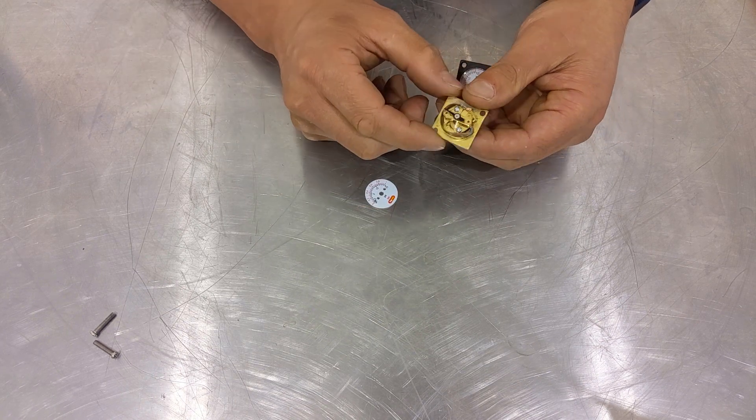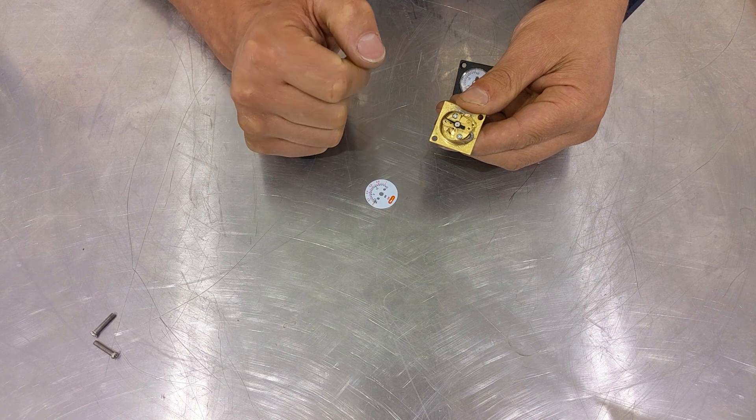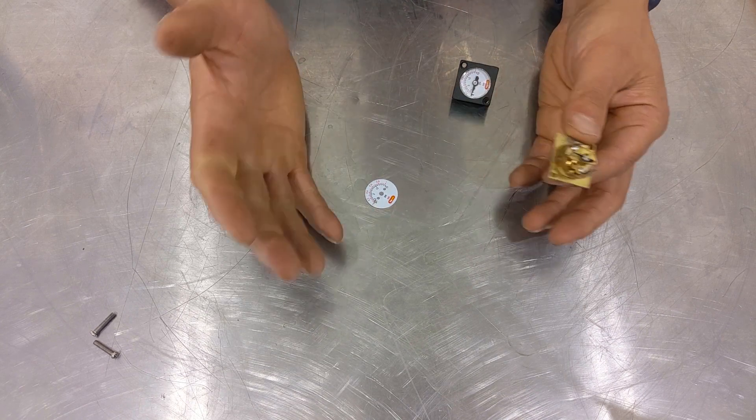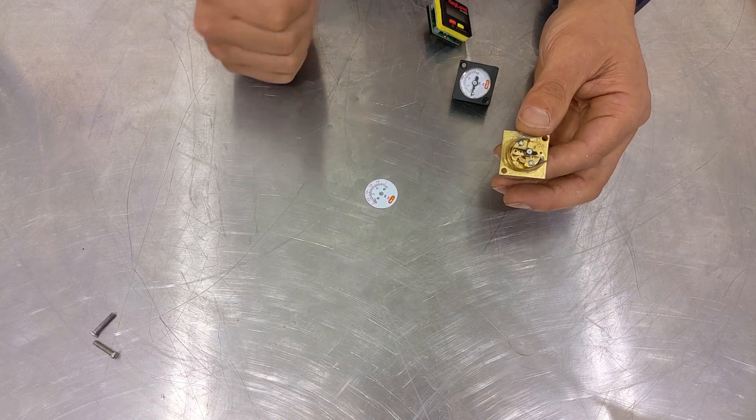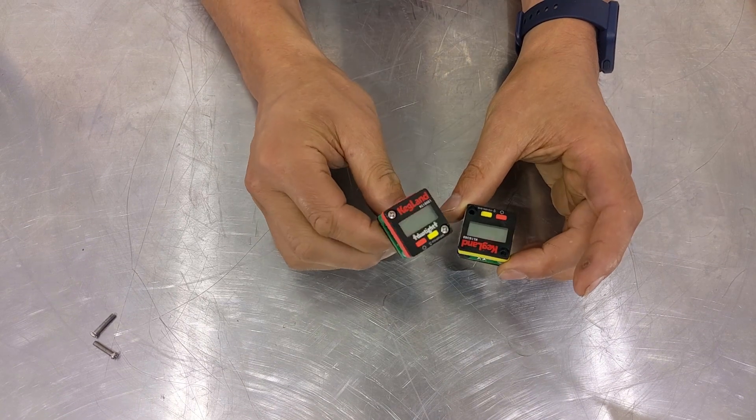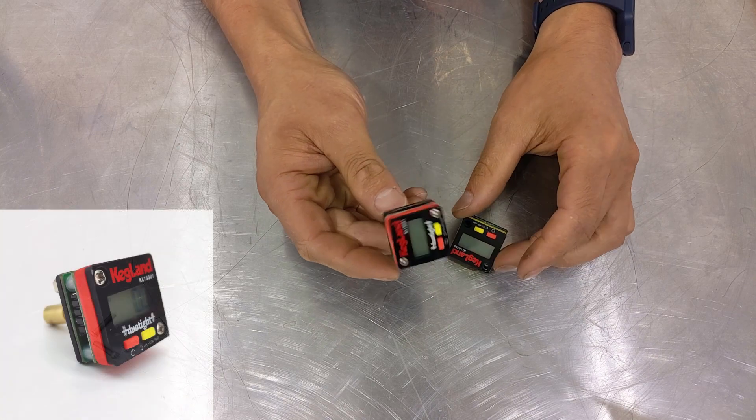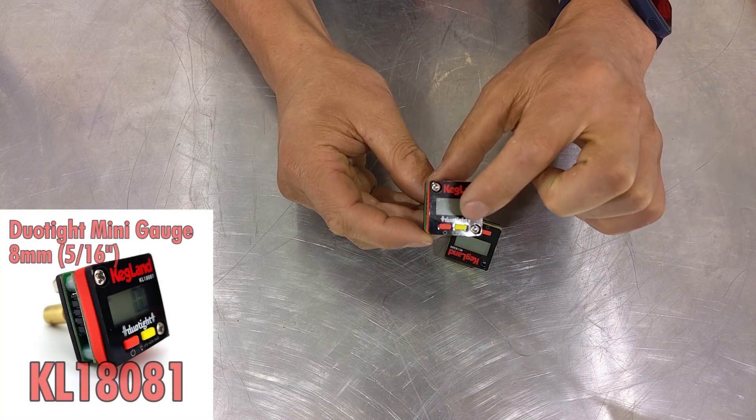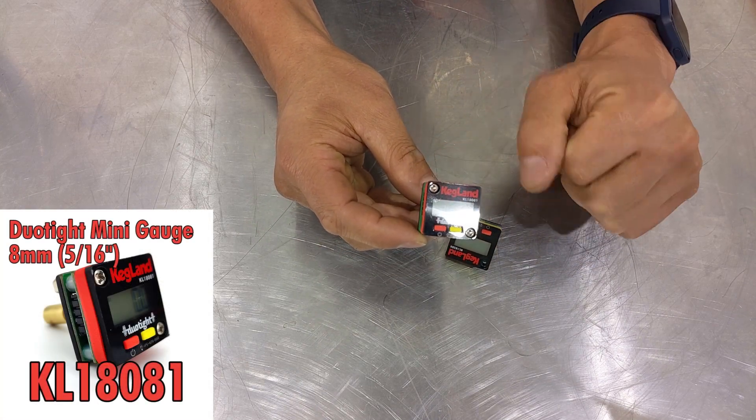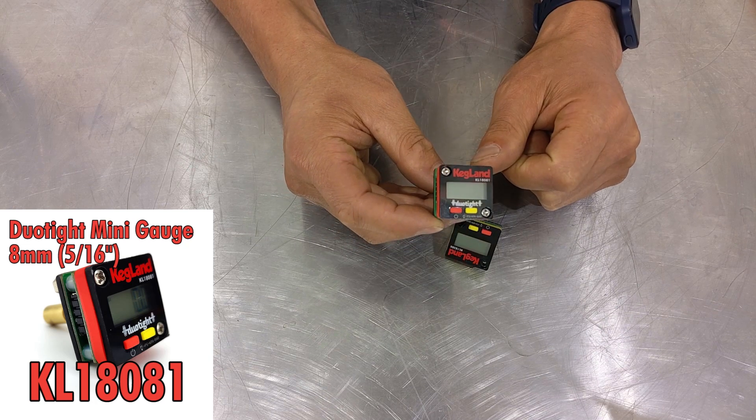Really the digital gauges are much, much better. Looking at the two different digital gauges that we stock, we've got this one here which is a duo tight one. You can see it says duo tight on the front and has a different part number there, the KL 18081.